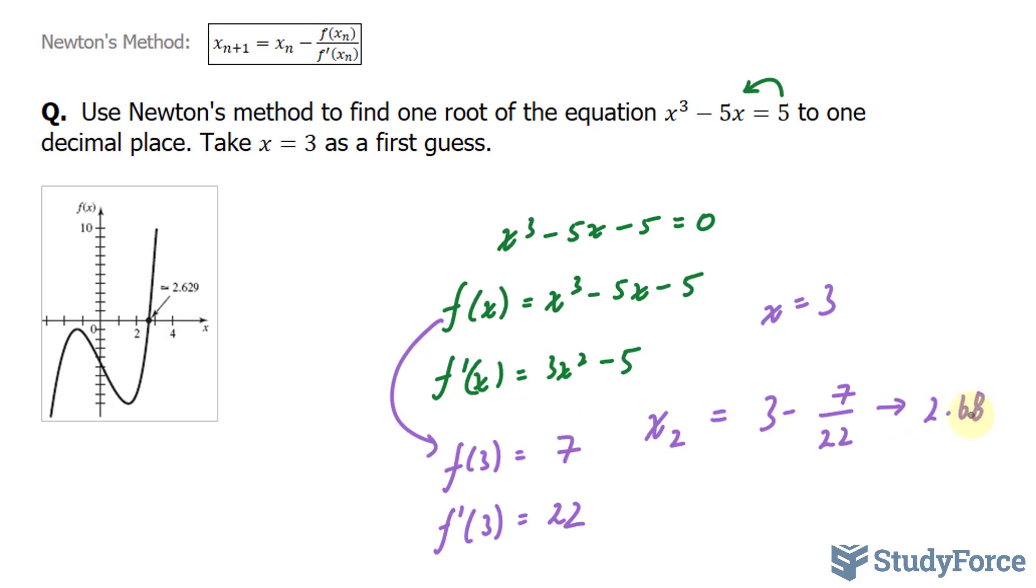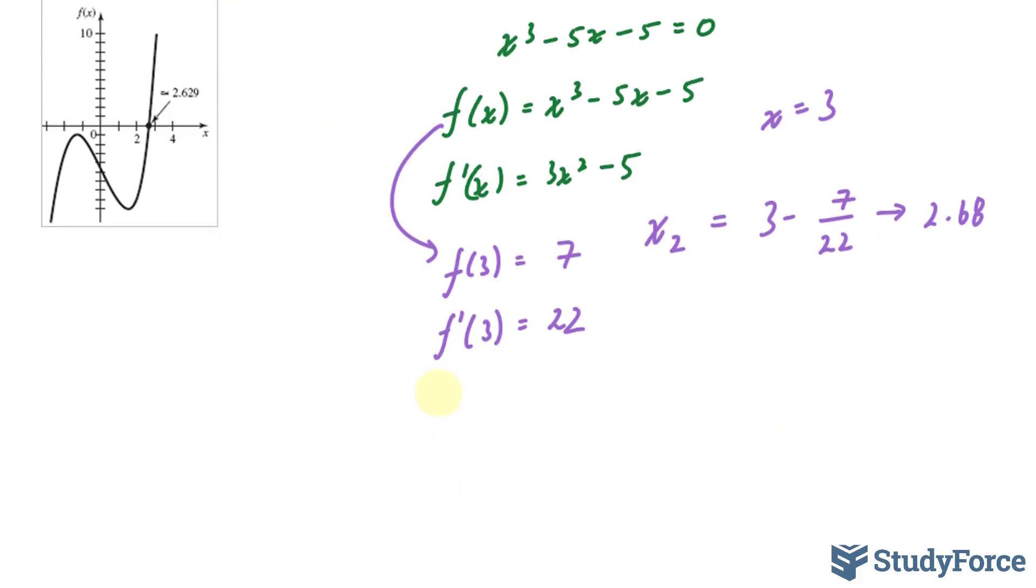Therefore, our second approximation is smaller than our original of x equals 3. And this is a good sign because remember when we did it electronically, we got 2.629 as shown in the graph. To find our third approximation, we'll repeat the entire calculation using 2.68 instead of 3.